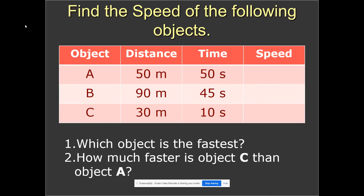We also talked about how speeds can be compared between objects. Looking at this example with objects A, B, and C, we've been given the distance each object covered and the time it took. We want to calculate their speed and then compare. Pause the video now and answer the two questions.